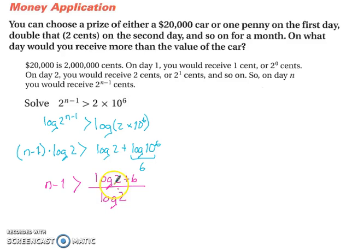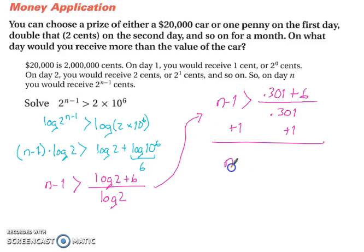We can get our decimal form of log base 10 of 2, which is 0.301. So we're going to finish this problem up here. We've got n minus 1 must be greater than 0.301 plus 6 over 0.301, and then we can add 1 to both sides, which leaves us with n must be greater than about 21.93.